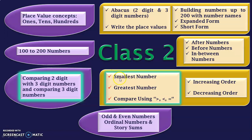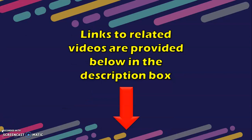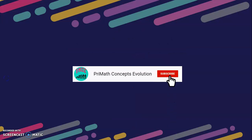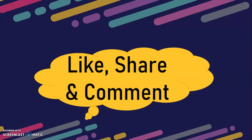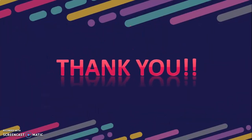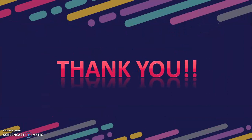We have completed identifying the smallest number, greatest number, and comparing numbers using symbols in this video. Arranging numbers in increasing and decreasing order will be covered in a separate video — links to all related videos are provided below in the description box. Dear viewers, if you like the content of my video, click the subscribe button and the bell button and choose all options for notifications. Give a thumbs up, share this video, and please provide your feedback in the comment section. Thank you for watching — meet you again in the next video with more informative sessions.